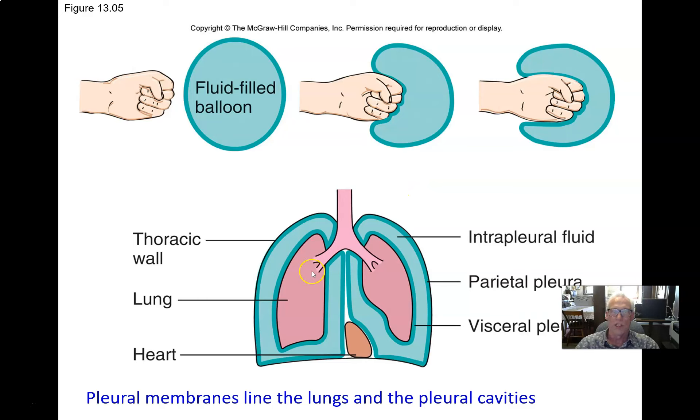The lungs are situated in the pleural cavities within the thoracic cavity. The thoracic cavity is divided into the two left and right pleural cavities and the mediastinum in the center. The pleural cavity is lined with an epithelial membrane called a serous membrane. This dark green line is called the parietal pleura.